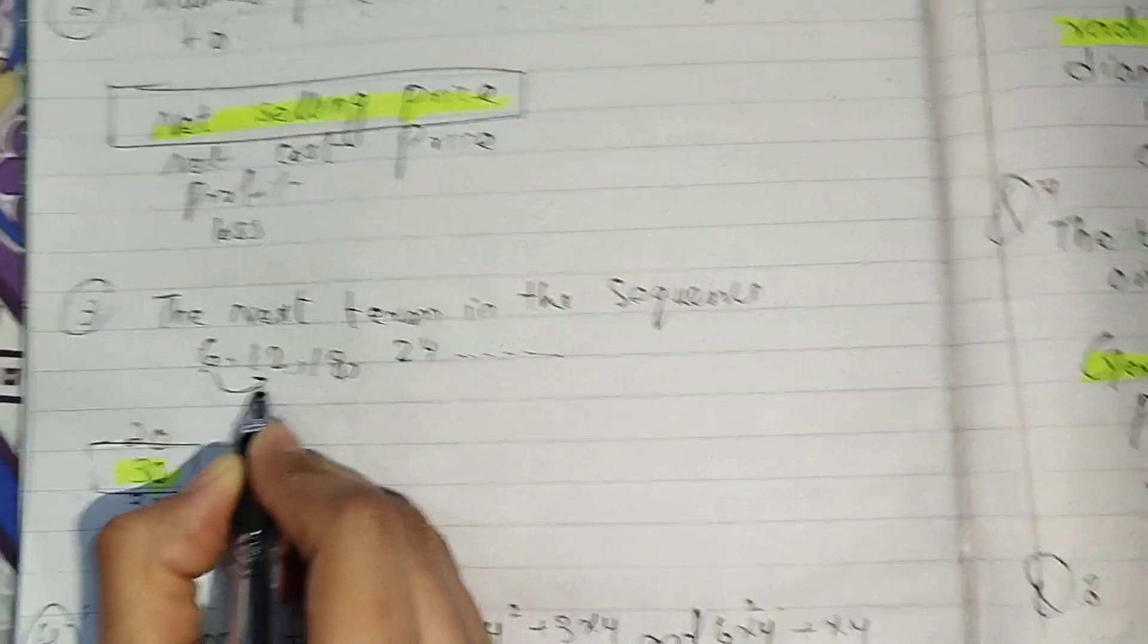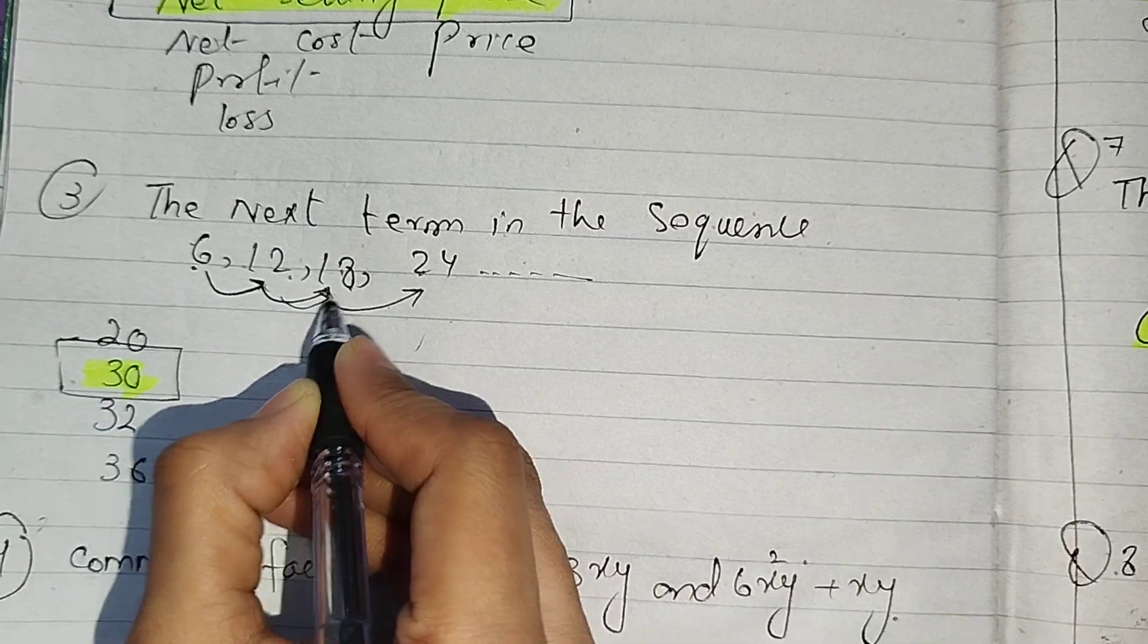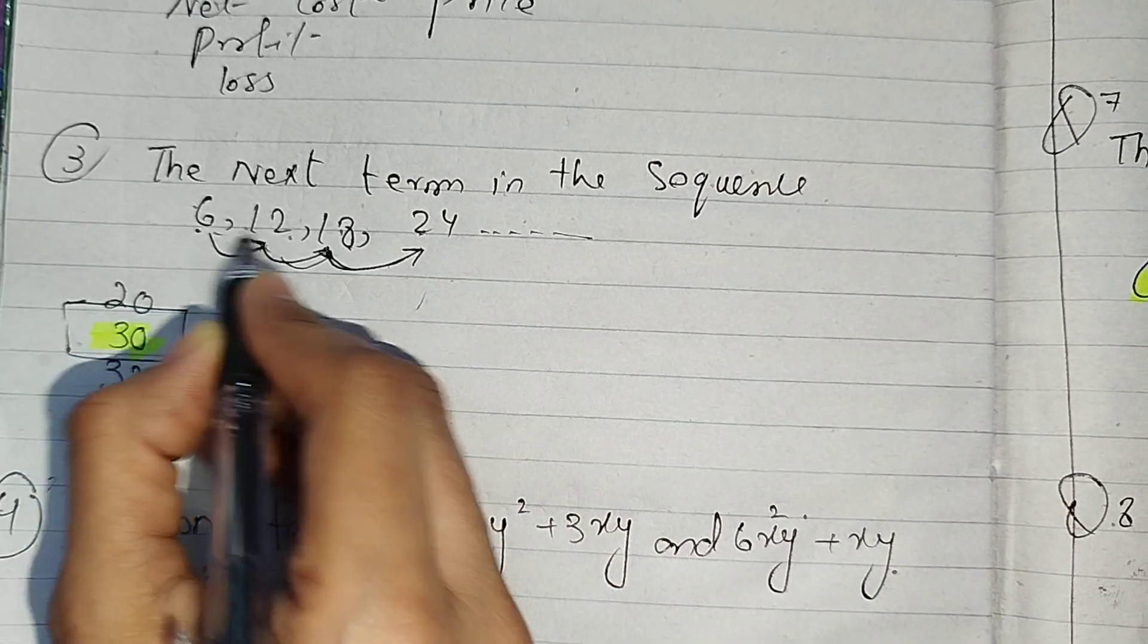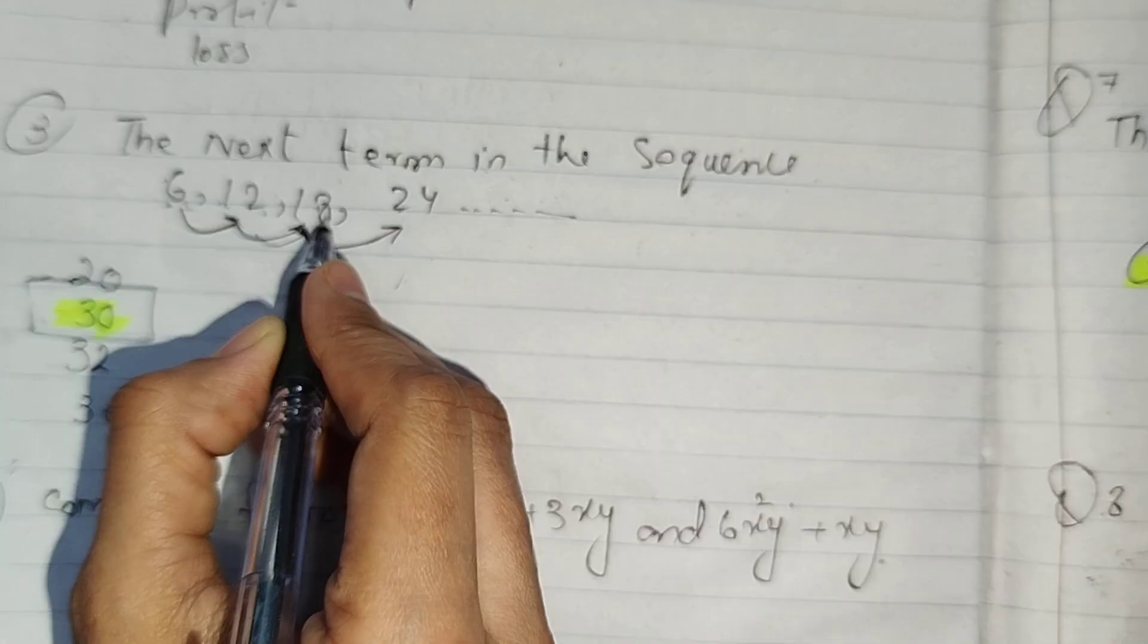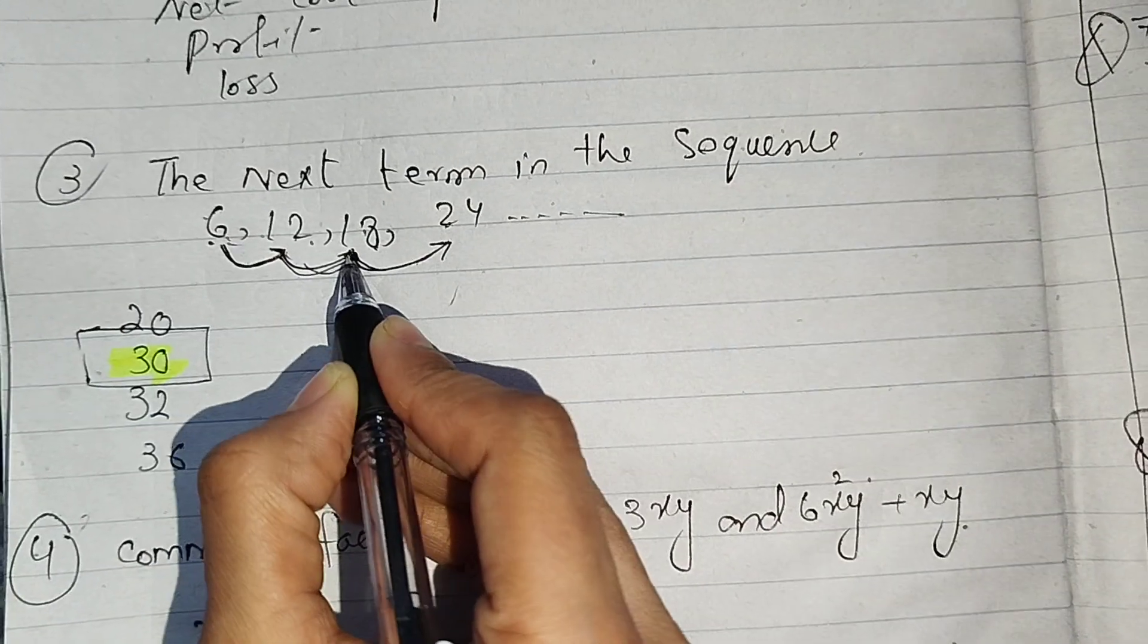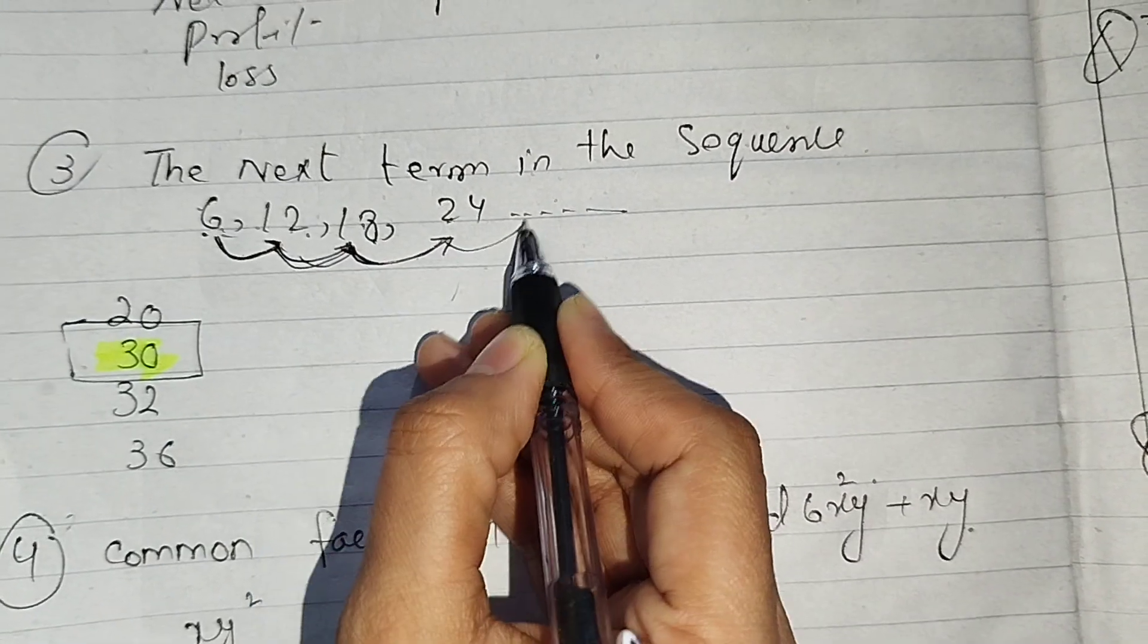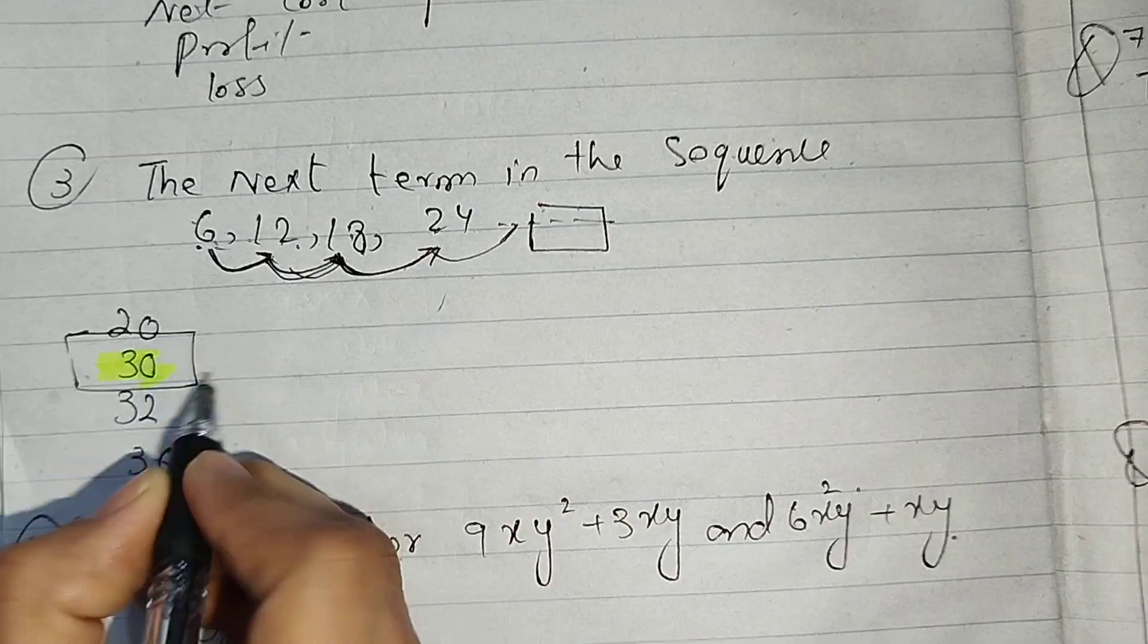Look, 6, 12, 18, 6, 12, 18, and 24. Look, the gap is going 6, 6. 1 times 6 is 6, 2 times 6 is 12, 3 times 6 is 18, 4 times 6 is 24, 5 times 6 is 30. The next term should be 30.